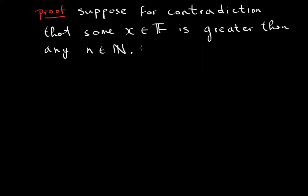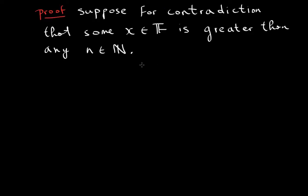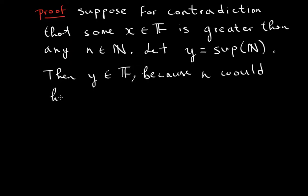Note: our Archimedean property is telling us that you give me an x, then x will be less than n. What I just did is assume that x will be greater than n — I assumed the opposite. So let y be the supremum of the naturals. Then y has to be an element of the field, because n would have to be bounded.